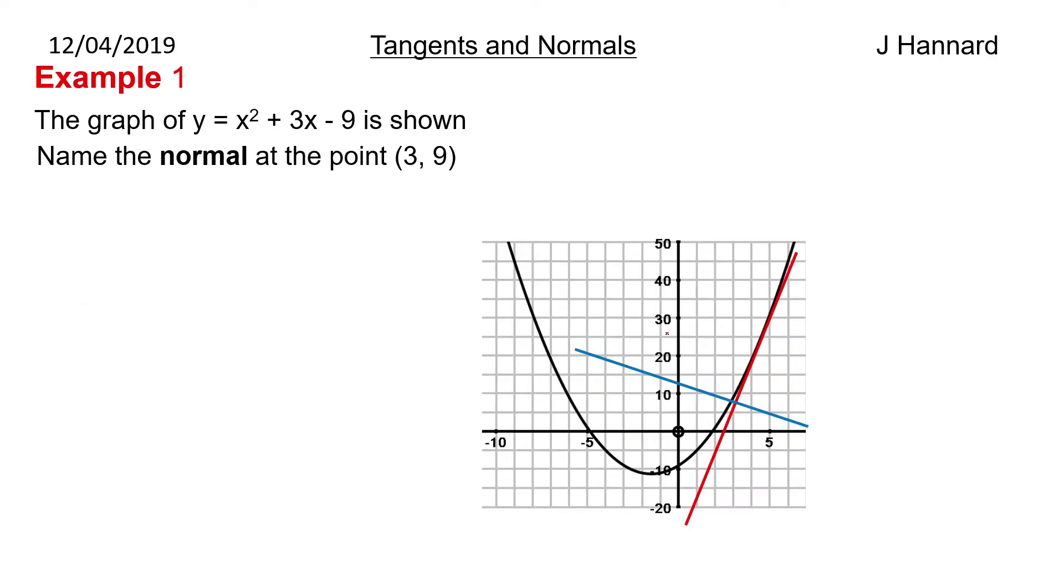Next then we have an example of finding a normal. So the graph of y = x² + 3x - 9 is shown. This is the one that we had in example 1, but this time we want the normal at the point (3, 9). You can see this line here is perpendicular to the tangent.